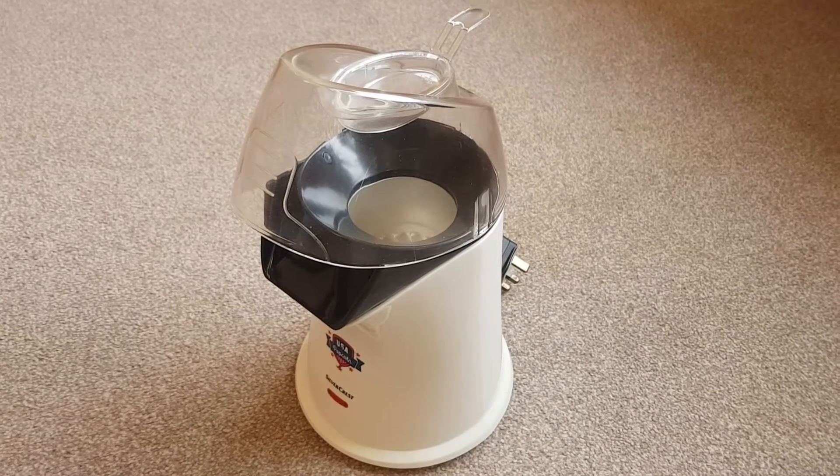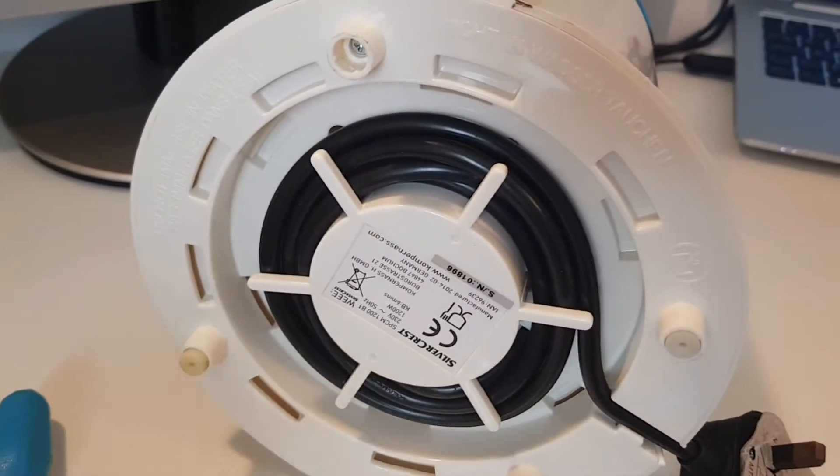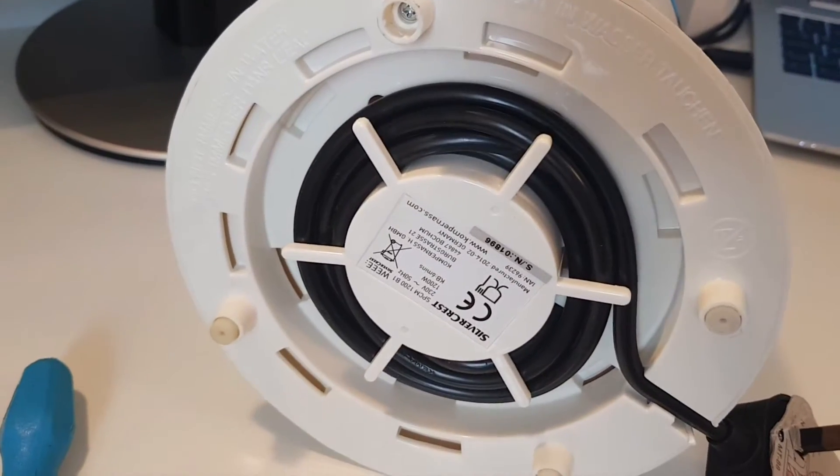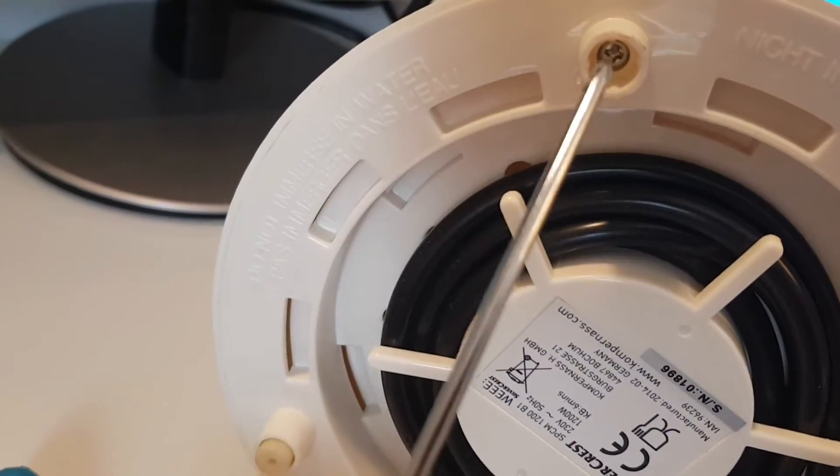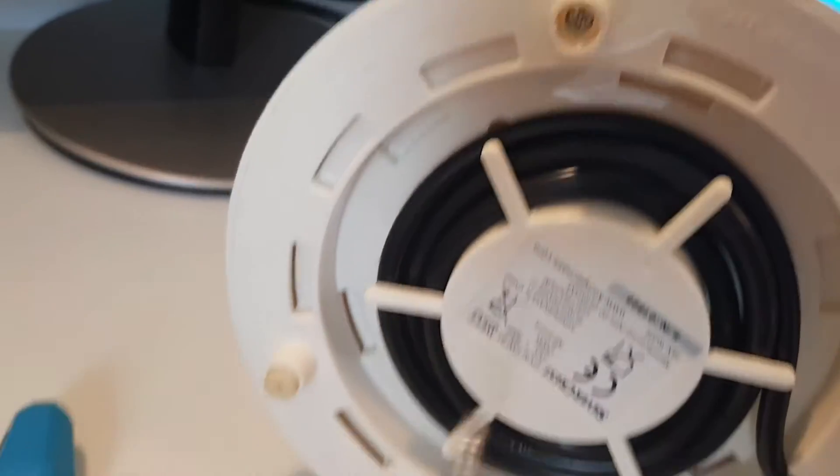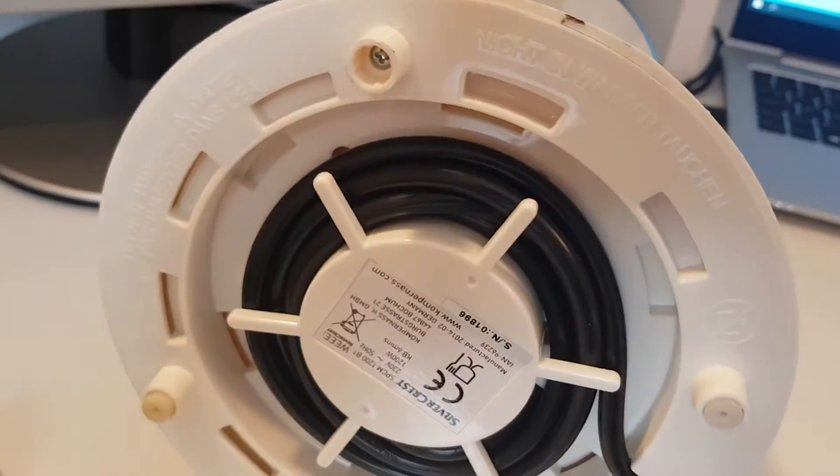Let's get started with trying to open this thing up. It looks like there's four screws holding this thing together. As you can see, if you take off these rubber feet here, it reveals the screws. We're just going to go in and undo all of those and see what we've got inside.